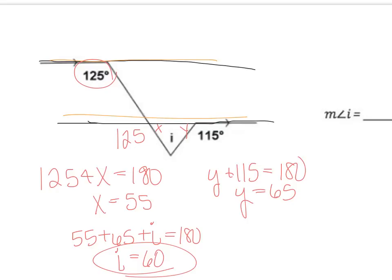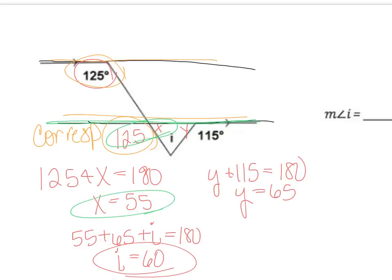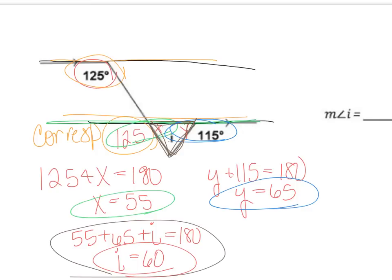I drew two auxiliary lines and found an angle using corresponding angles. With this line I have a linear pair, so x equals 55 degrees. Then another linear pair gives y equals 65. Then I looked at the small triangle, which gave me x plus y plus i using the sum of interior angles.